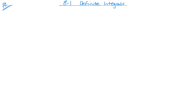If I start with an integral, say something like 5x cubed dx, normally when you integrate this, you would add one to the power, divide by that power, and then of course get the plus c. And that's what you end up with.